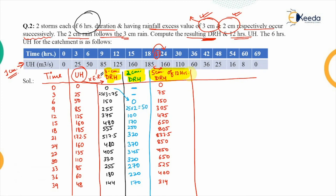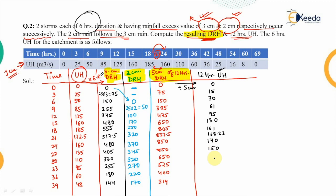This is the 5 cm, 12-hour direct runoff hydrograph. To obtain the 12-hour unit hydrograph, divide all ordinates by 5 cm, giving: 0, 15, 30, 61, 95, 130, 161, 168.33, 170, 150, 130, 105, 80, 62.8. These are the ordinates of the 12-hour unit hydrograph.